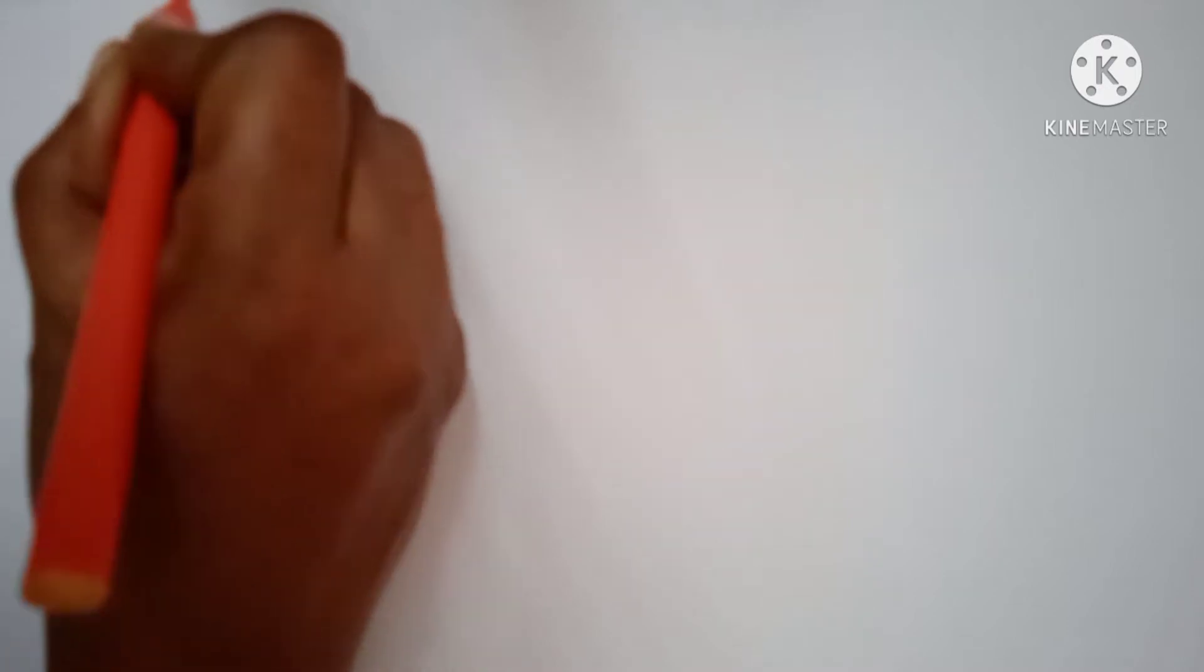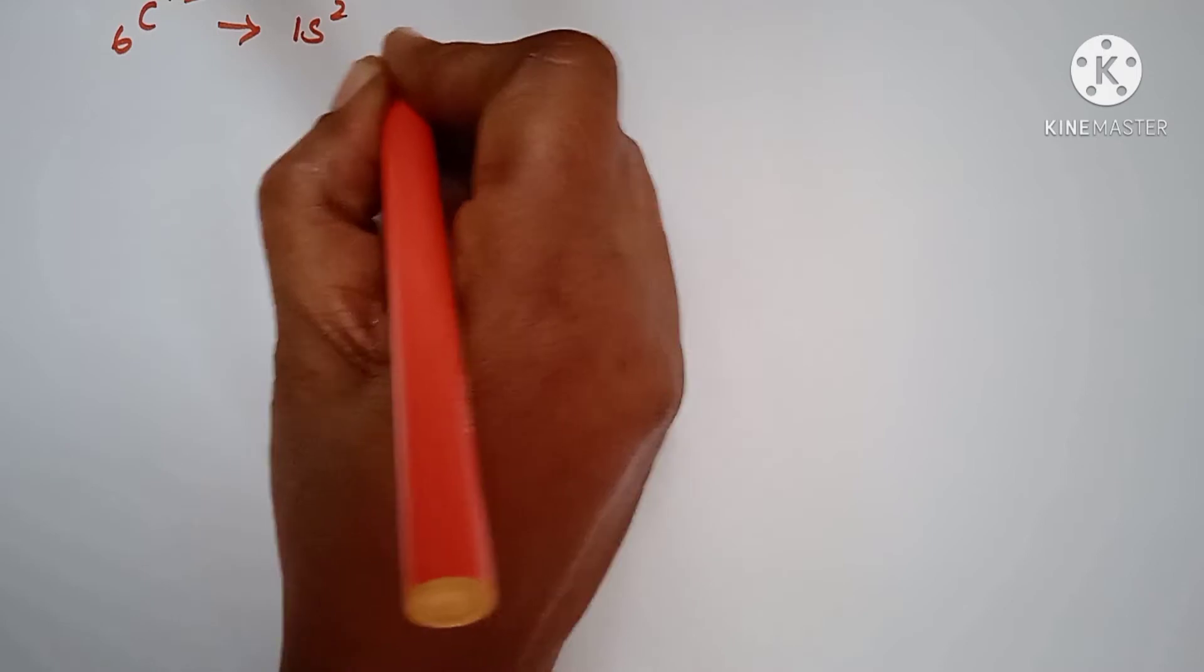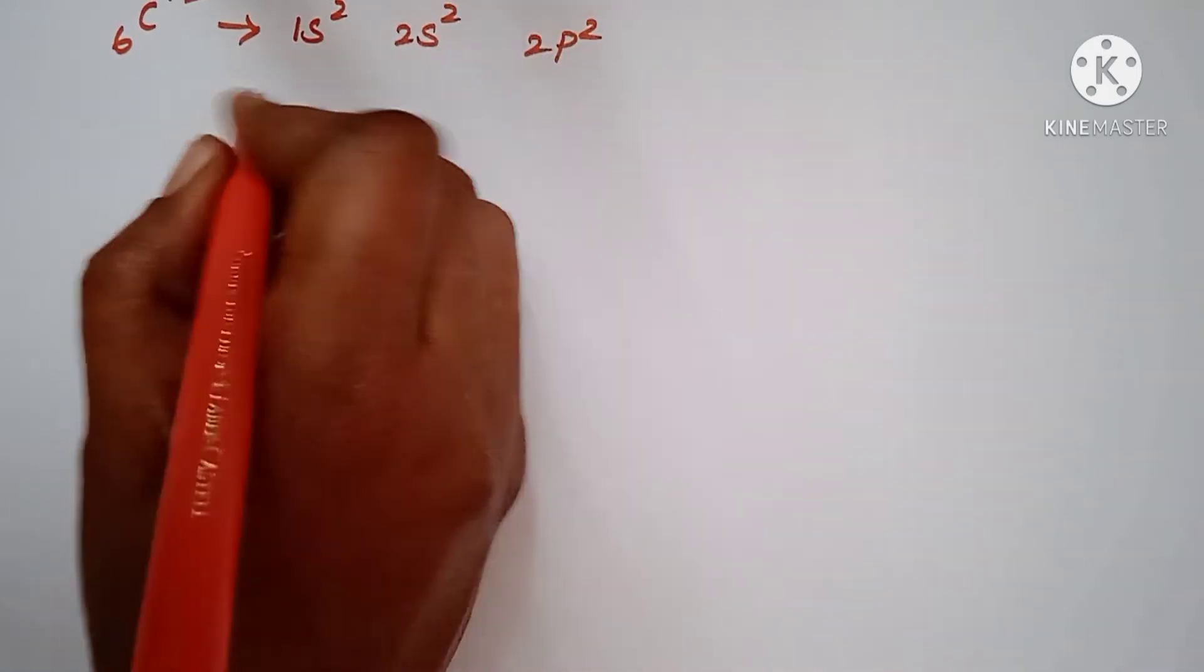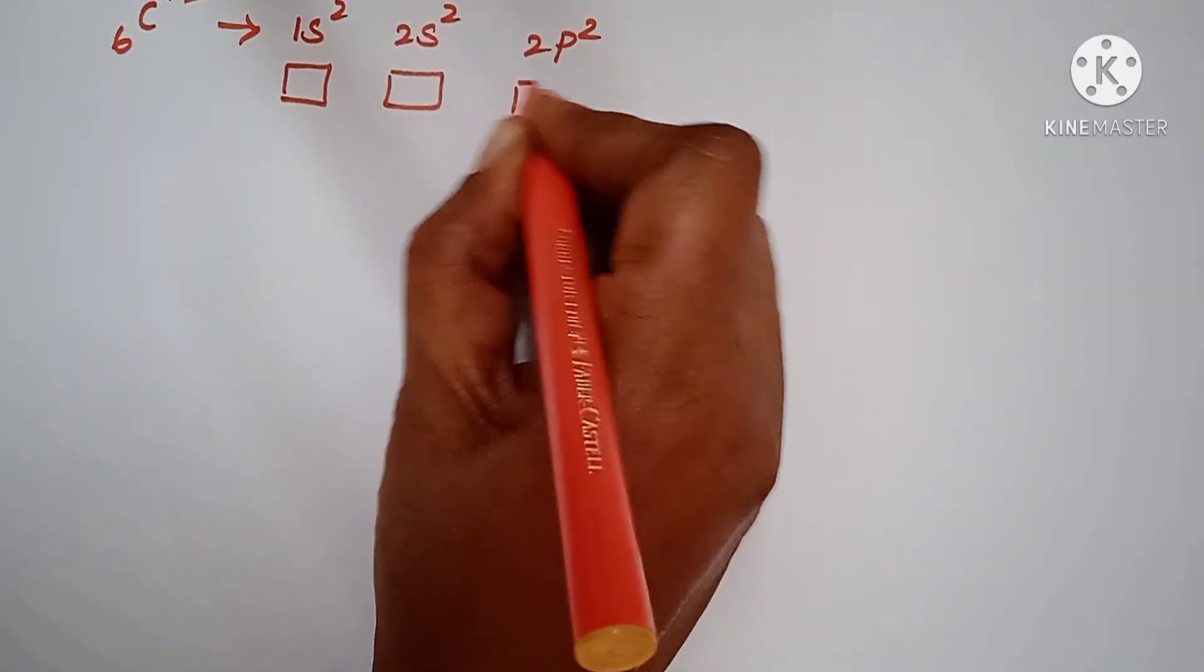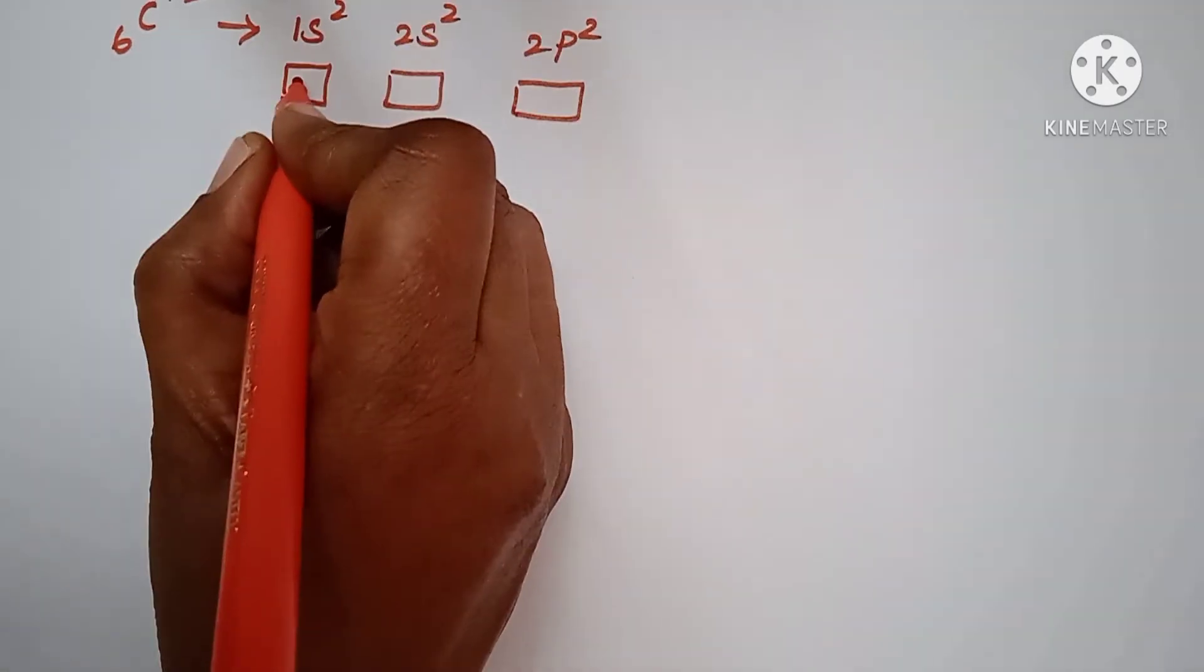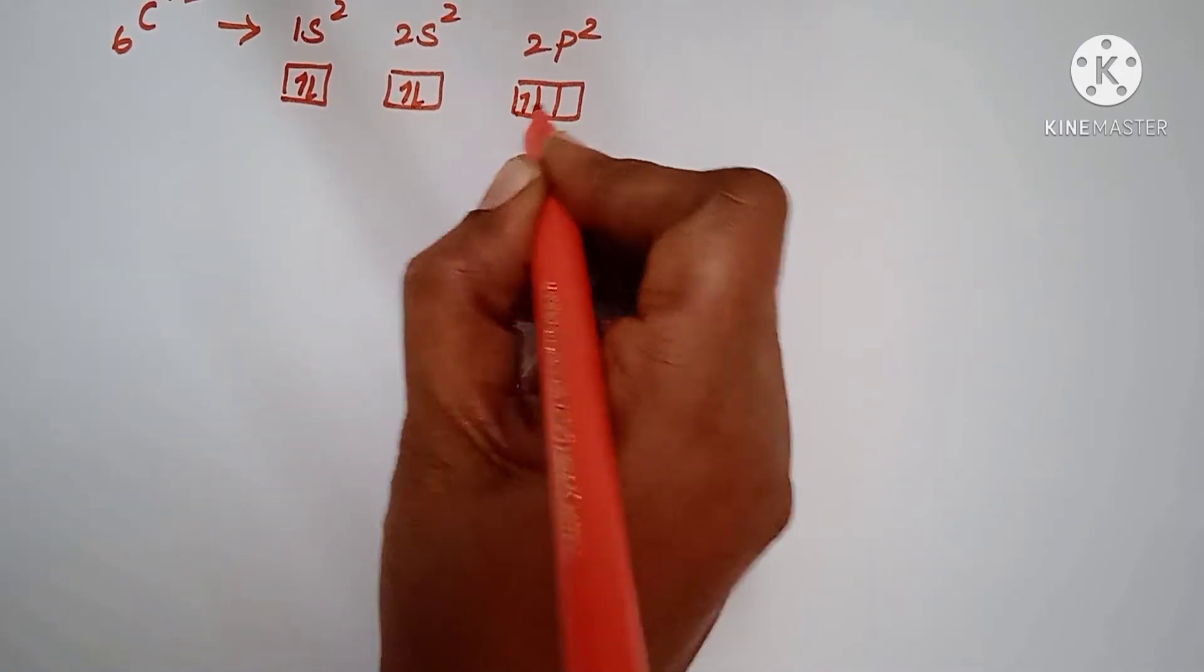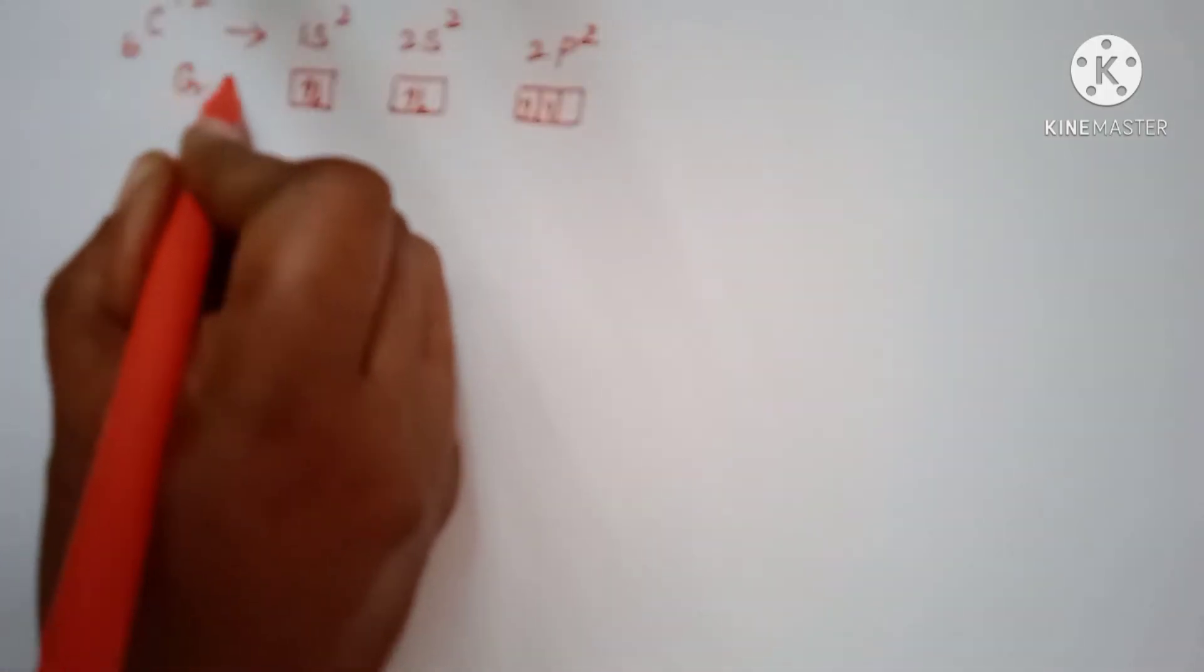Now carbon atomic number, what it is? 6, carbon 12. What is the electronic configuration? 1s2, 2s2, 2p2. So here outermost orbital, how many electrons are remaining? 4 electrons are remaining. Now how do we get that 4 electrons? Now this is the ground state.